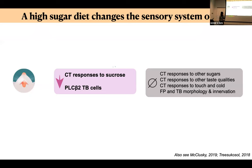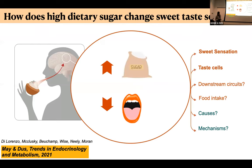Another paper showed that after three days of sucrose exposure there was also a small difference in chorda tympani responses at one concentration. So at least in rats and flies, increased sucrose induces a decrease in peripheral sensory responses. We're also interested in whether this occurs in humans — many people describe increased sweetness perception when they go on a ketogenic diet or cut sugar for fasting, which I find very intriguing. So we thought we could use the fly to try to understand the causes and mechanisms.